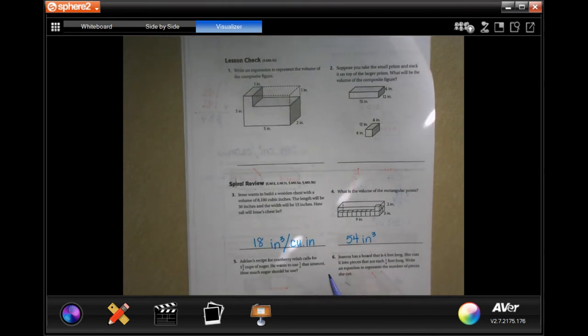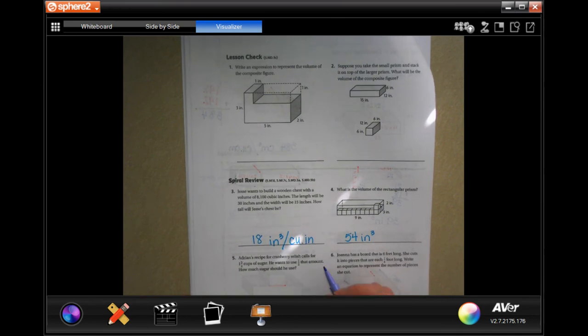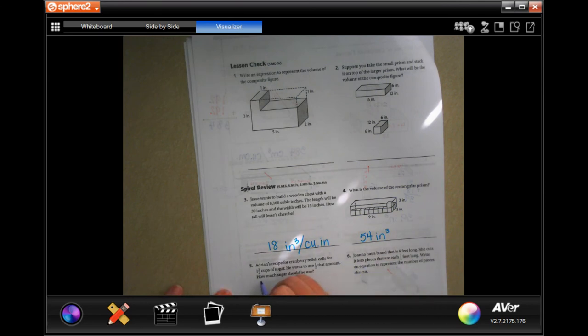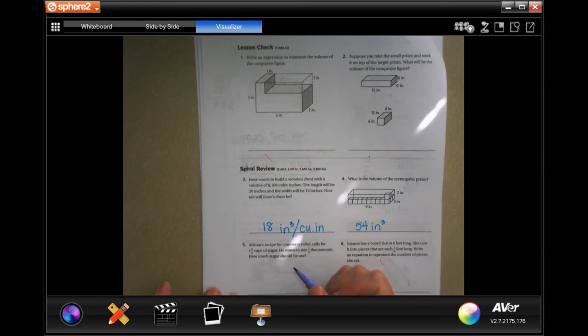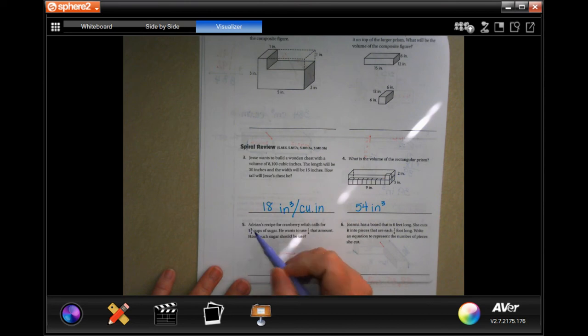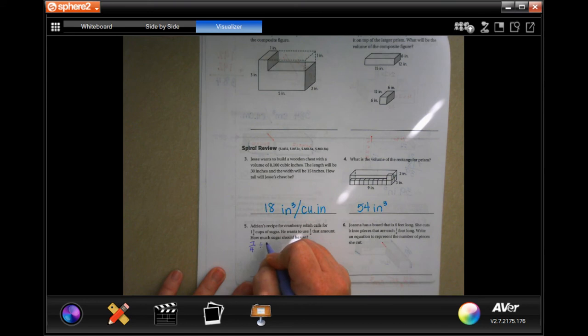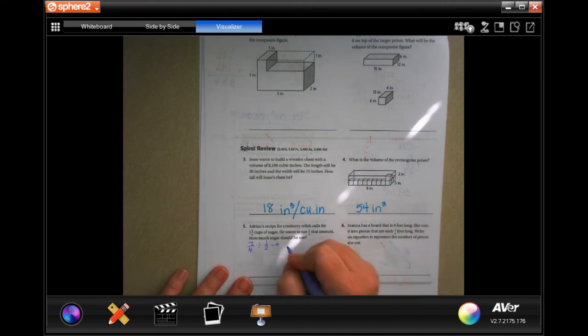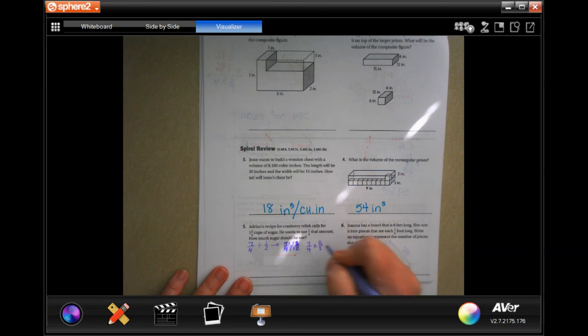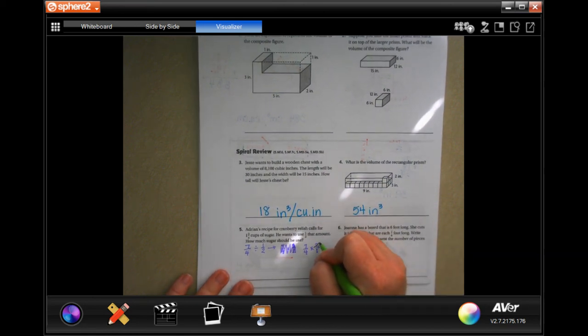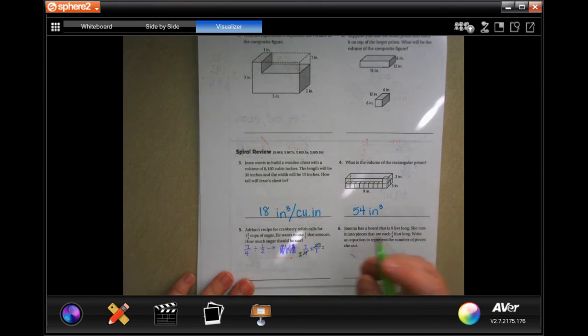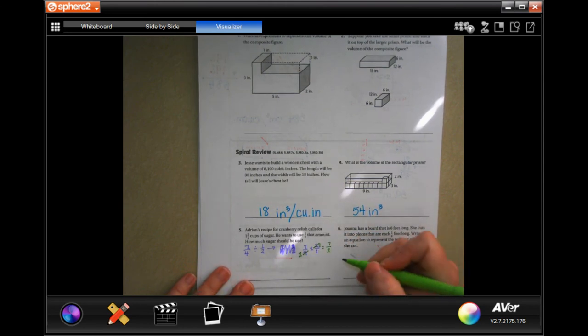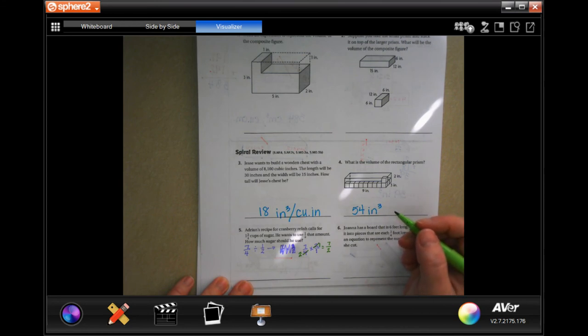Adrian's recipe for cranberry relish calls for 1 and 3/4 cups of sugar. He wants to use half that amount. How much sugar should he use? First I'm going to turn 1 and 3/4 into an improper fraction using dead man. 4 times 1 is 4 plus 3 is 7, so 7/4 divided by 1/2. When we divide fractions, we keep, change, and flip. Now I just need to get that back into a mixed number. Two goes into 7...